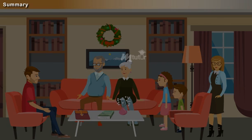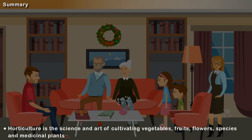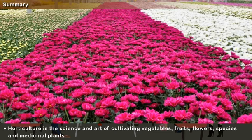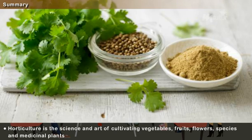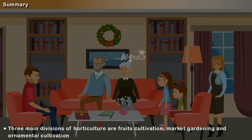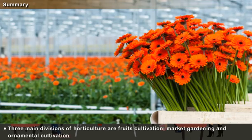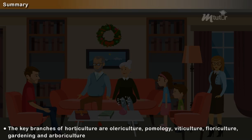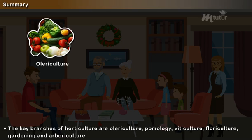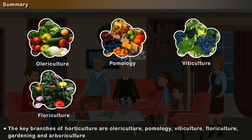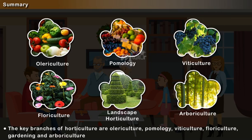Summary: Let us summarise what we have learnt. Horticulture is the science and art of cultivating vegetables, fruits, flowers, spices, and medicinal plants. The three main divisions of horticulture are fruit cultivation, market gardening, and ornamental cultivation. The key branches of horticulture are olericulture, pomology, viticulture, floriculture, gardening, and arboriculture.